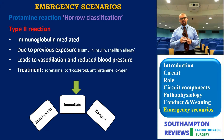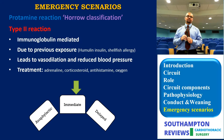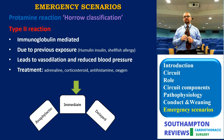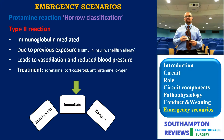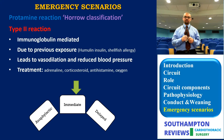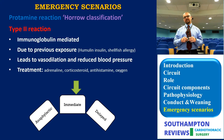Type 2 reaction is immunoglobulin-mediated, occurring due to previous exposure - for instance in patients with shellfish allergy. Historically, protamine was made from salmon fish semen, hence shellfish allergy predisposes to this reaction. More commonly, it occurs in patients on Humulin insulin, because Humulin contains protamine - creating prior sensitization. It manifests as vasodilation and reduced blood pressure. Treatment is more complex: adrenaline, corticosteroids, antihistamines, and oxygen. It may be immediate, like true anaphylaxis, or delayed, depending on severity.